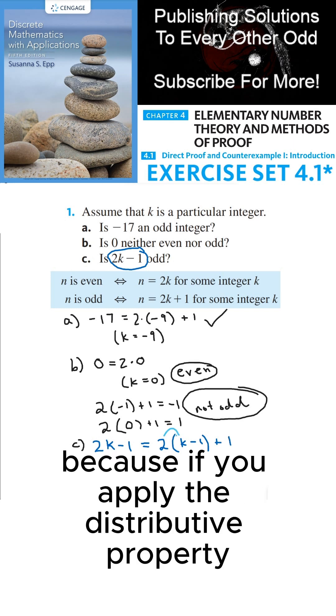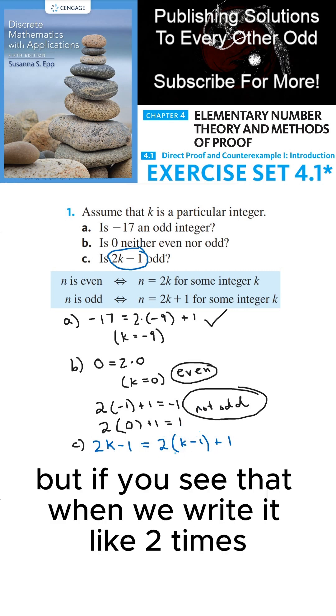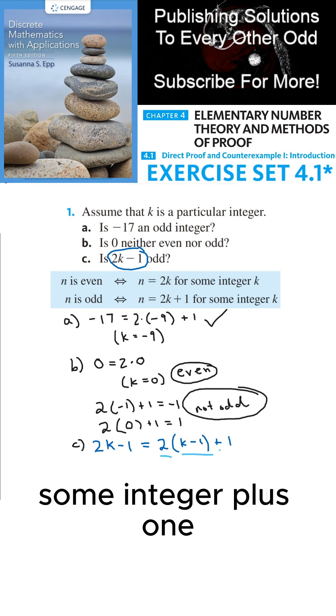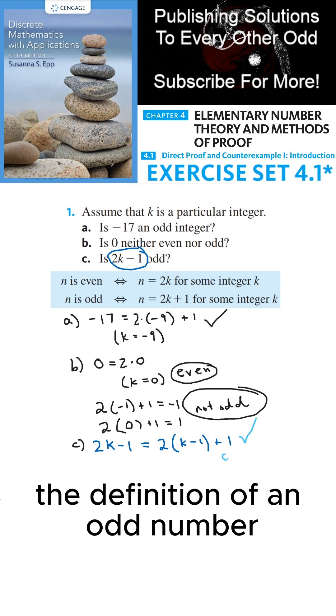These two are the same because if you apply the distributive property, this is 2k minus 2 plus 1, which is 2k minus 1. But if you see that when we write it like 2 times some integer plus 1, we can clearly see that this satisfies the definition of an odd number.